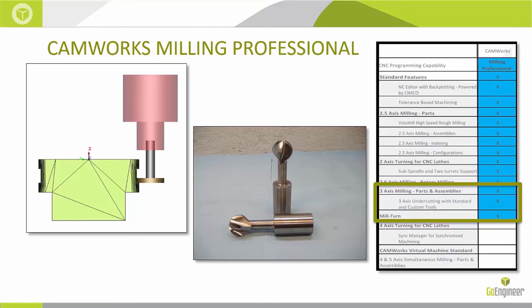CAMWorks Milling Professional adds the items highlighted in the green box — we are now able to do three-axis undercutting with standard and custom tools. You can see that same funnel mold from earlier, and in a side view there are two slots running down the side. We can get a tool into those slots as long as the cutting diameter (shown in gold) is slightly bigger than the shank diameter (shown in gray). This is undercutting, done with a keyway cutter or what we call a lollipop cutter.